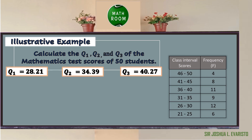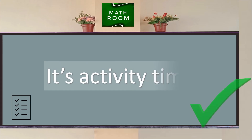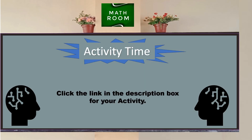In summary, the lower quartile Q1 = 28.21, the middle quartile Q2 = 34.39, and the upper quartile Q3 = 40.27.